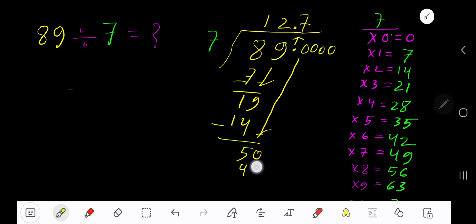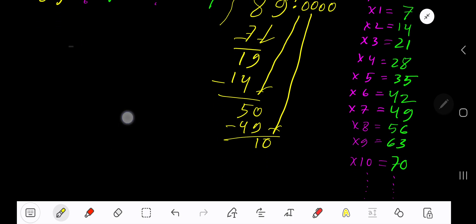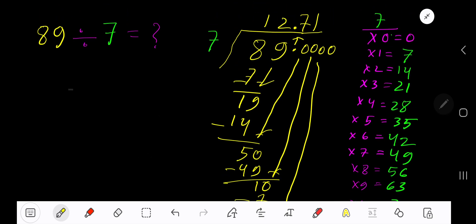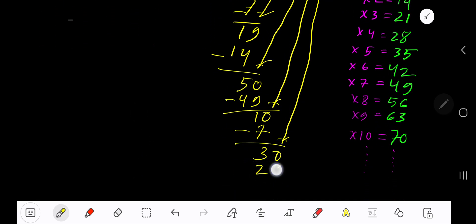7 times 7 is 49. Subtract 1, bring down another zero. 7 goes into 10 how many times? One time. 1 times 7 is 7. Subtract 3, bring down another zero. 7 goes into 30 how many times? 4 times. 4 times 7 is 28. Subtract 2.